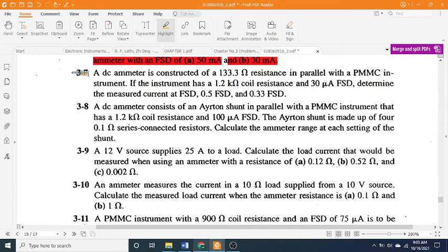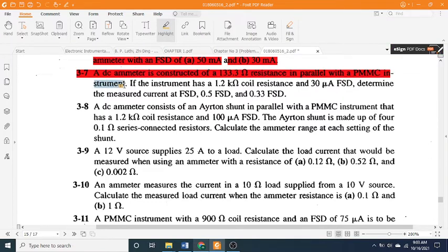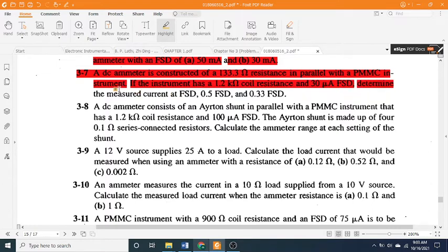3-7: A DC ammeter is constructed of a 133.3 Ω resistance in parallel with a PMMC instrument. If the instrument has a 1.2 kΩ coil resistance and 30 μA FSD, determine the measured current at FSD, 0.5 FSD, and 0.33 FSD.